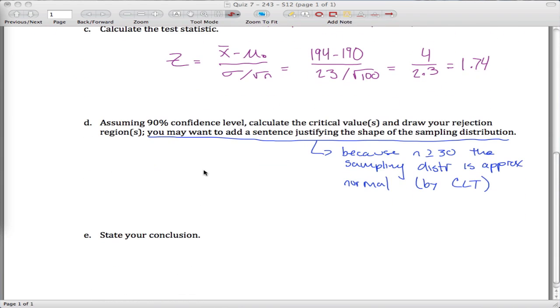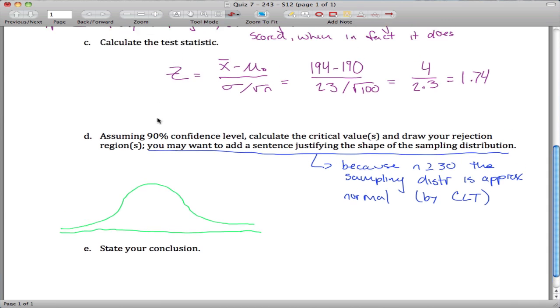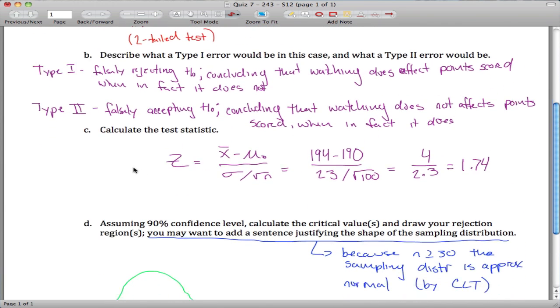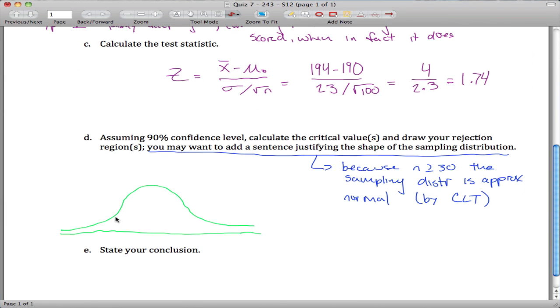So now we want to draw our picture. So we have a 90% confidence level. Let me draw this picture here. Here's my sampling distribution, something like that. And what's important here is we have a two-tailed test. So we're going to have two critical values and two rejection regions. So we're going to have these two critical values over here and one rejection region out here and one rejection region out here.